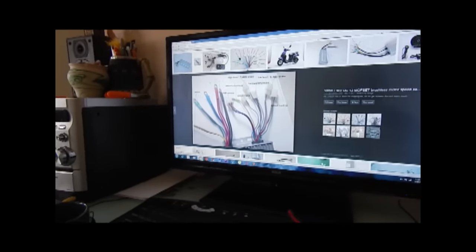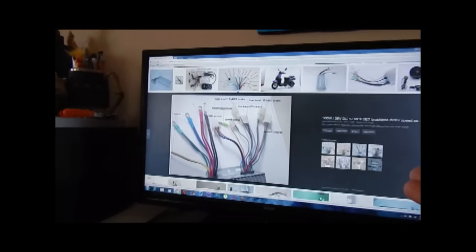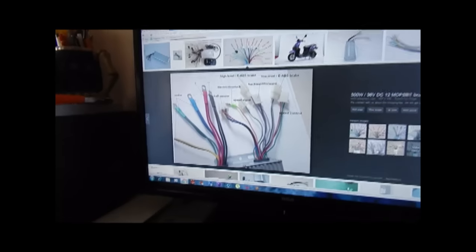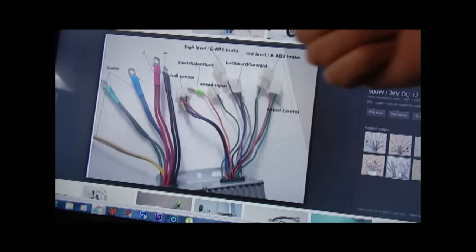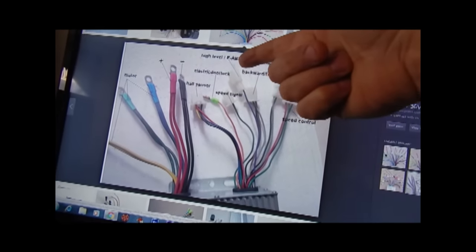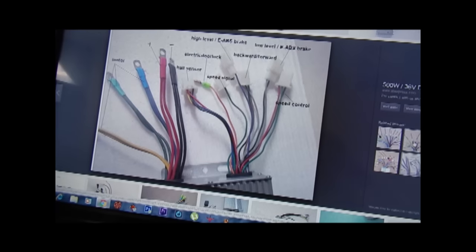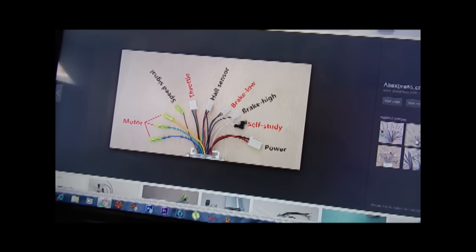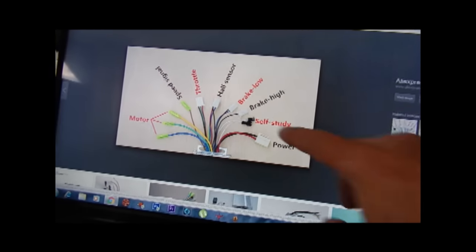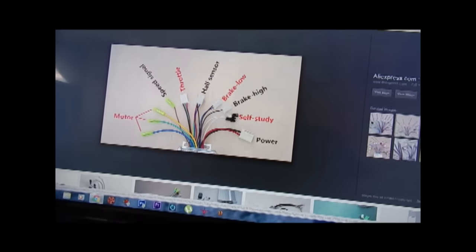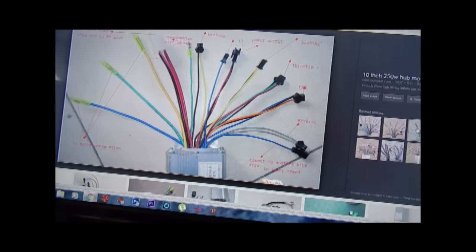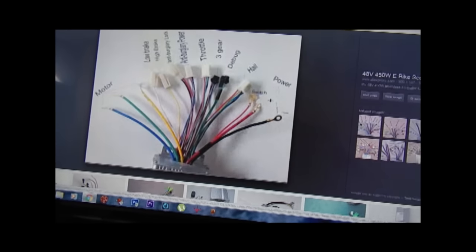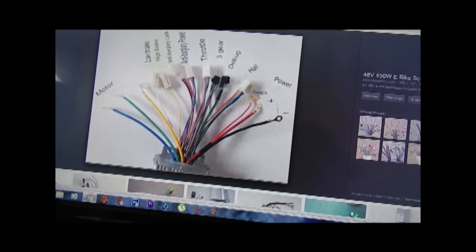When you look up wiring harnesses on different controllers online, each one is different. Like this one is a purple wire for e-ABS, then you click on another one it's black, whereas this one here is blue. The problem is if I just try grounding a wire and I ground the wrong one...